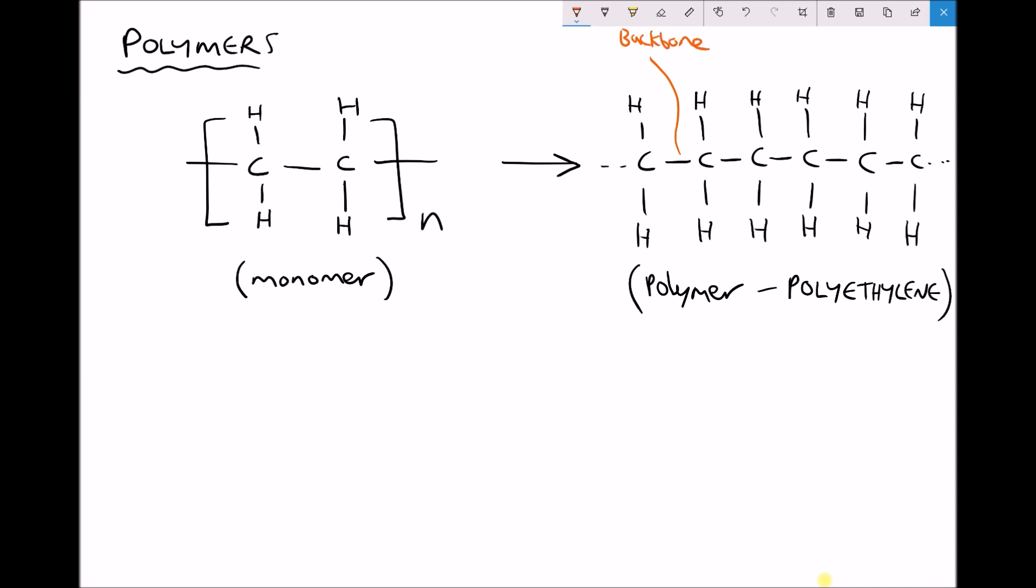Now this particular polymer that's drawn here is called polyethylene and it consists entirely of carbon and hydrogens. In fact, the formula for the monomer on the left hand side would just be C2H4 and we would see that repeat throughout the chain. In effect, for every carbon we have two hydrogens providing that's a continuous chain.